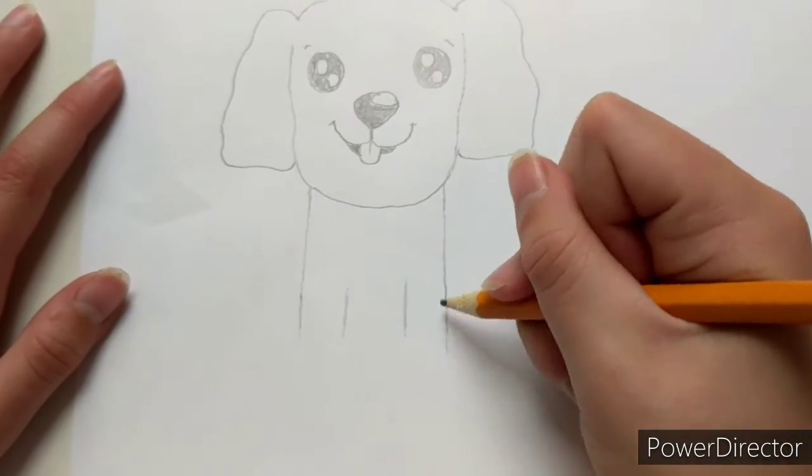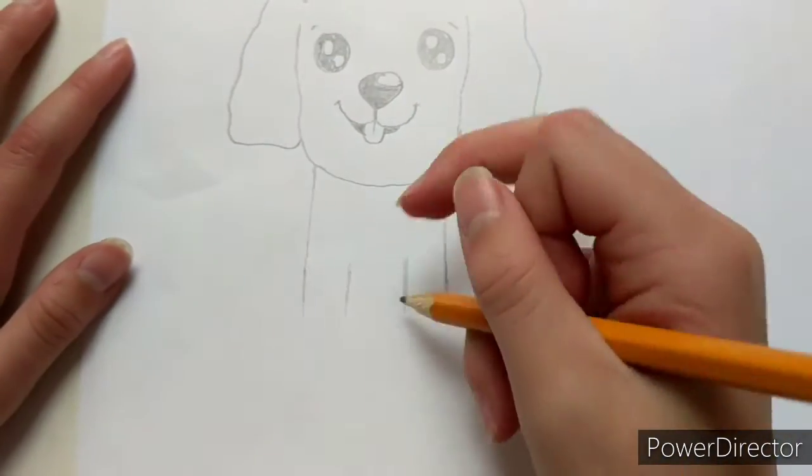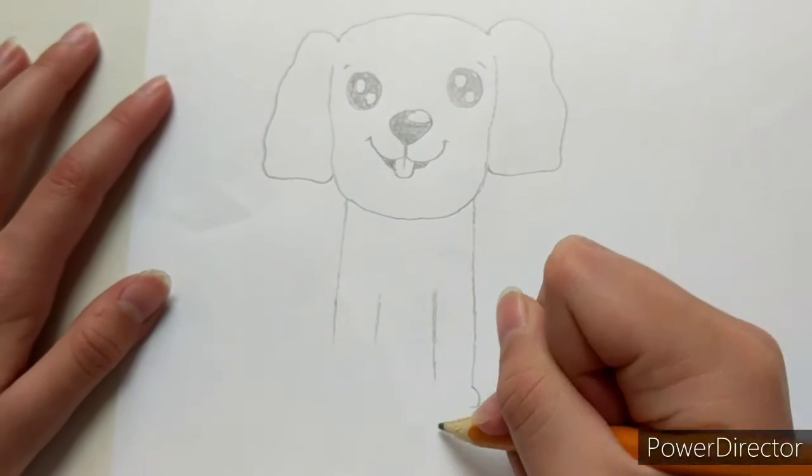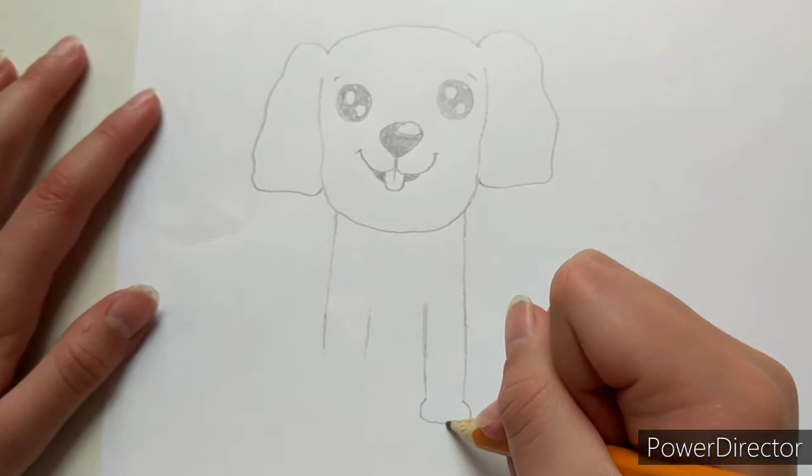So start on its legs after about half an inch. And then go out a little bit for its paw.